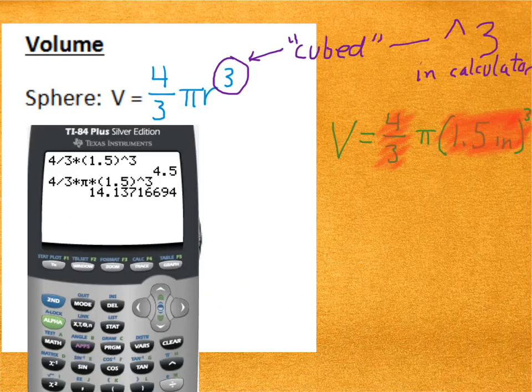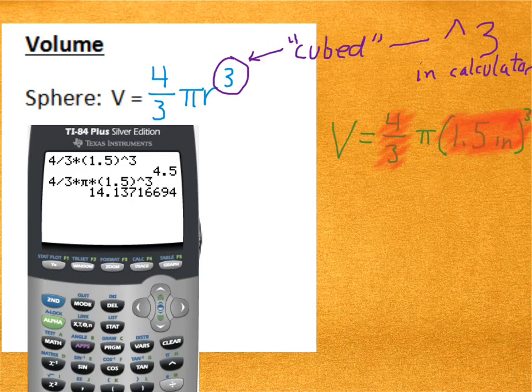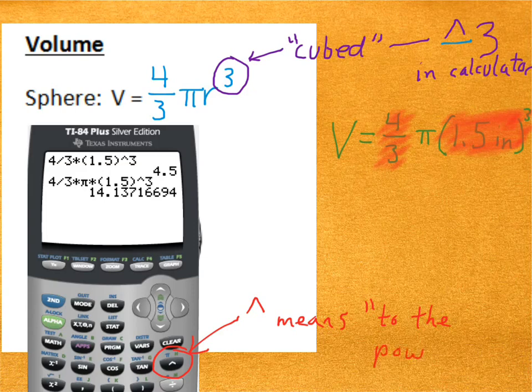Now, here's an issue. You've got to know how to type that third power in the calculator. So, we use a symbol that looks like an arrow pointing upwards. Let's call it a caret. What it simply means is to the power of. And you can see I indicated where that button is on your calculator.